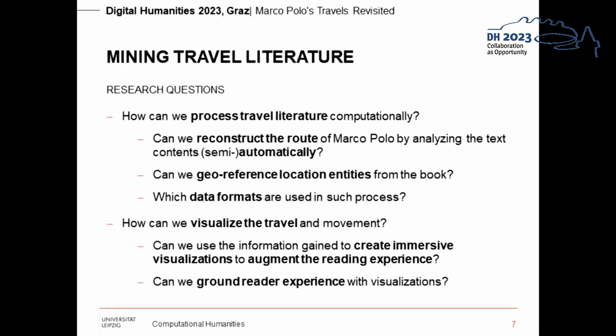These are then used to create 3D renderings of the space and movement that will allow readers to visually trace Marco Polo's route themselves. Our main research questions are: Can we reconstruct the route of Marco Polo by analyzing the text contents semi-automatically? Is it possible to georeference location entities from the book, and which data formats are used in such a process? Can we use the information gained to create immersive visualizations to augment the reading experience, and can visualizations be used to align the reader's experience with reality?